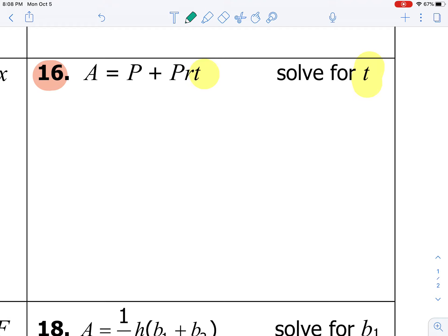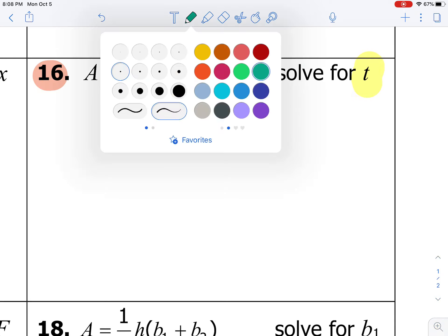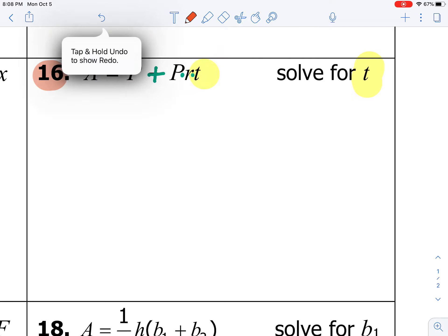We're looking to see what's happening to t. Well, P and R are both being multiplied times t. Then, there's another P that's being added to t. So to follow order of operations in reverse, the first thing that we need to take care of is the addition. In order to move P to the other side, we need to subtract P from both sides. So on the left, we have A minus P, and once we subtract P from the right, all we have left is PRT.